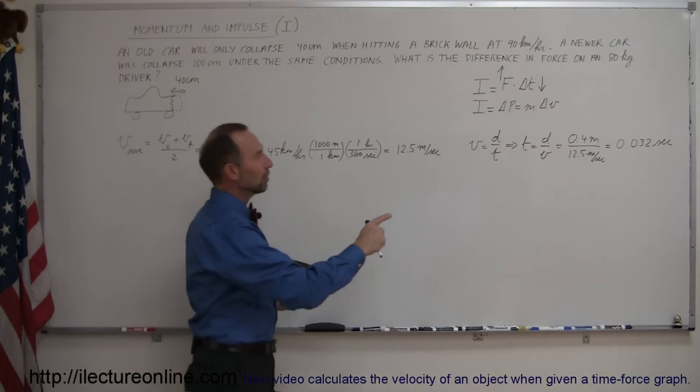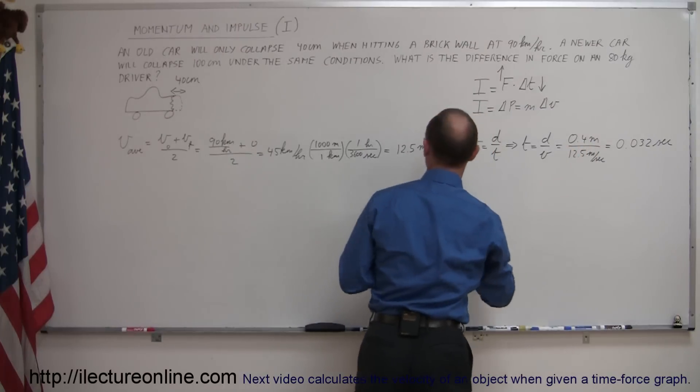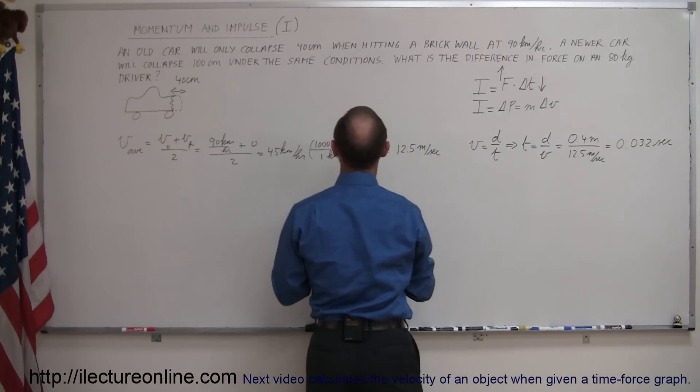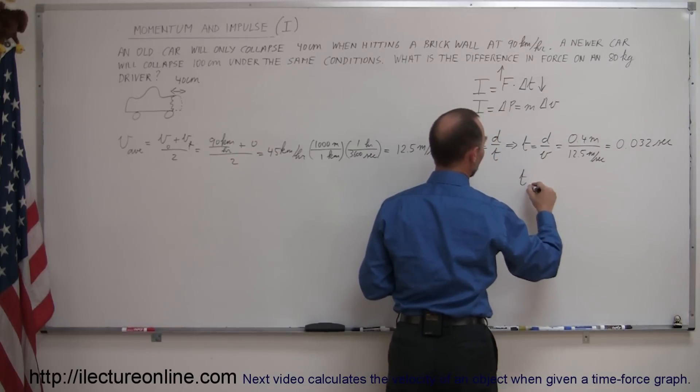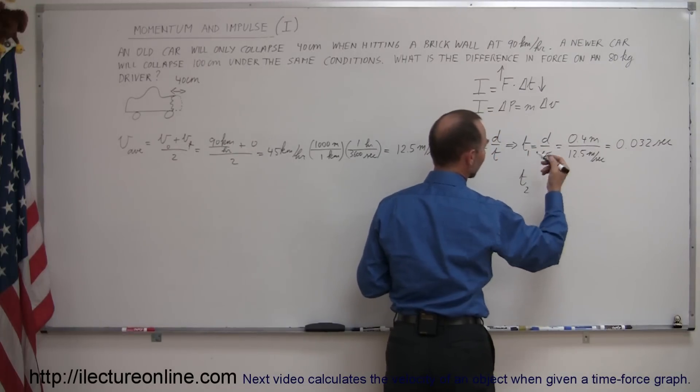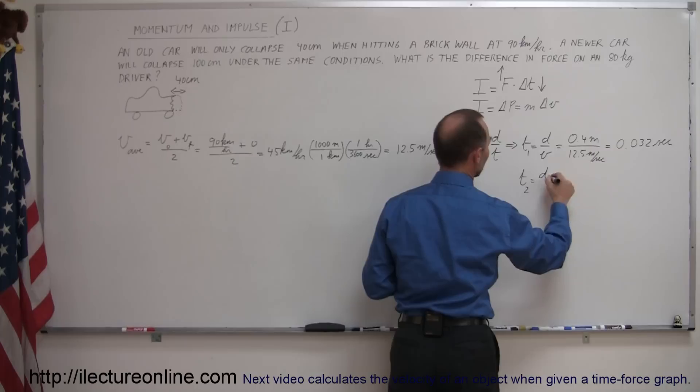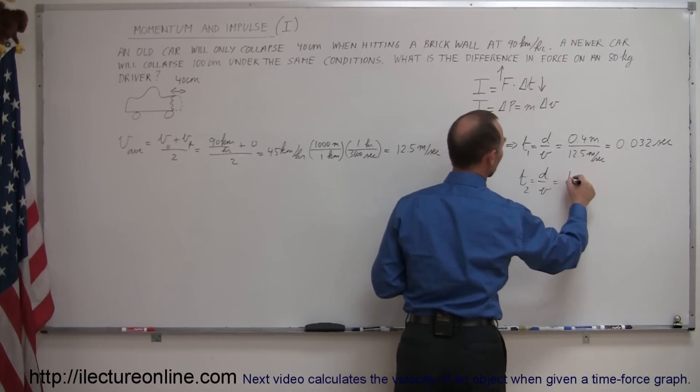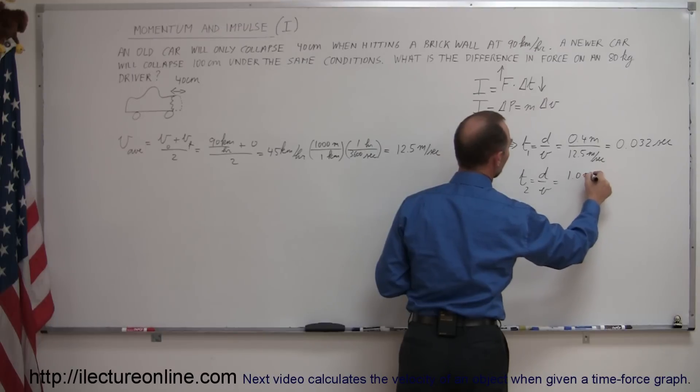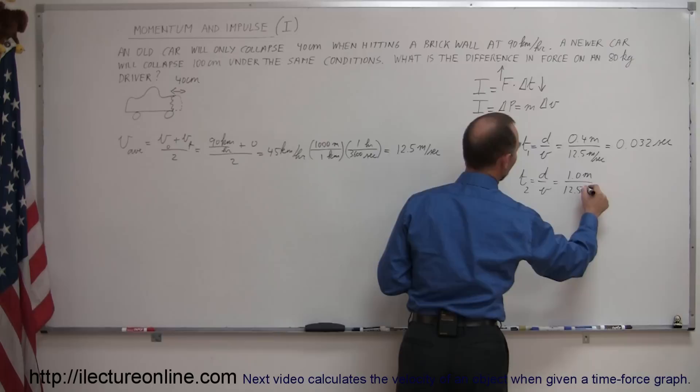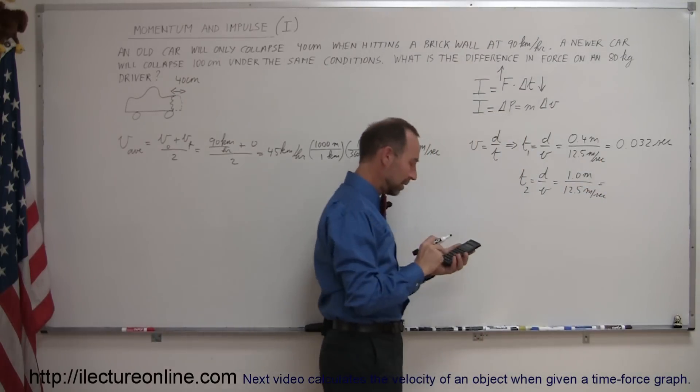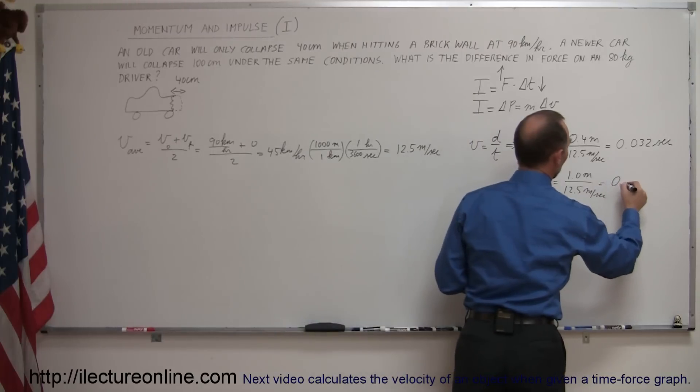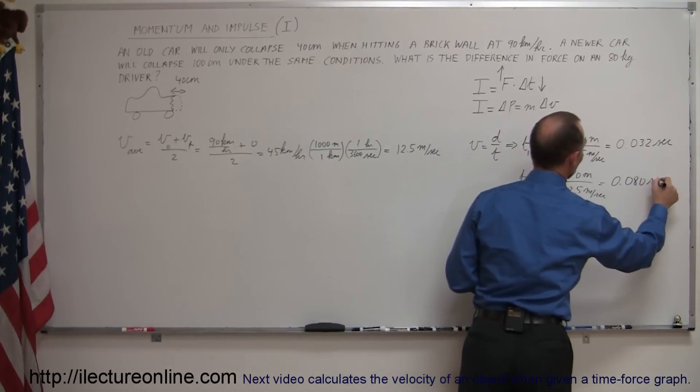So if we then use this very same equation, we have the same average velocity from 90 kilometers per hour to zero, but the collapse will be greater distance. So time for the second car, let's call this for the first car, is equal to distance over velocity. In this case it's a whole meter divided by 12.5 meters per second, and so that would be two and a half times as great, times 2.5, and we get 0.080 seconds.